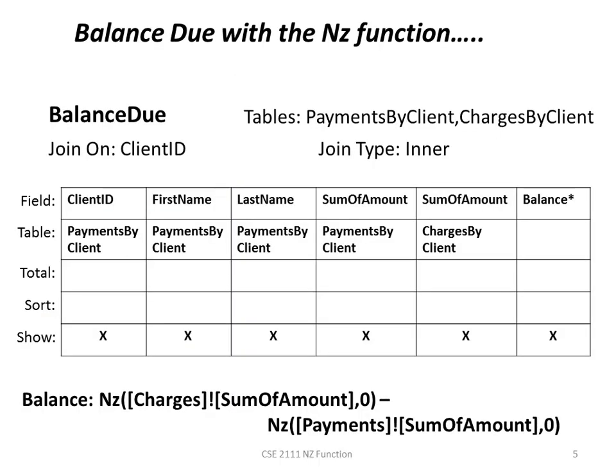Here is our balance due grid that we had in the outer join lecture. Notice now at the bottom we have NZ, charges, sum of amount, comma zero. It will evaluate the sum of amount field in the charges table — if that field is null, it will use a zero in the calculation. Likewise, we have NZ, payment, sum of amount, comma zero. If that field is a null value, then it will substitute a zero in the calculation.